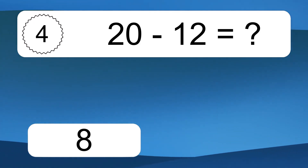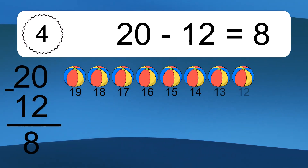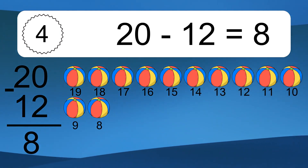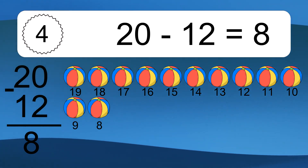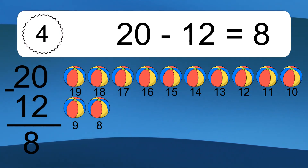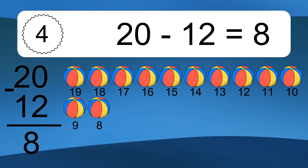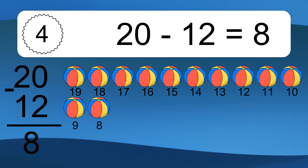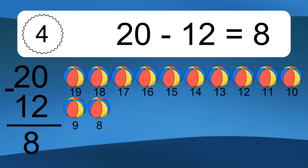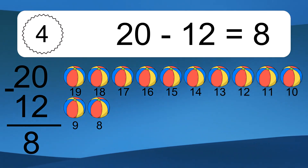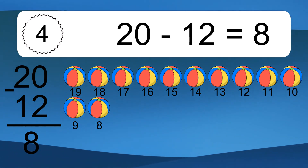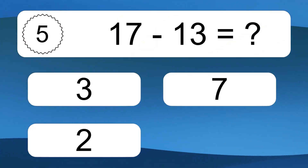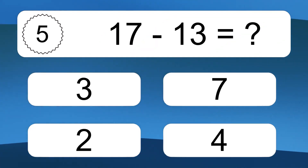20 minus 12 equals 8. Let's count it. 19, 18, 17, 16, 15, 14, 13, 12, 11, 10, 9, 8.